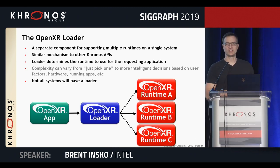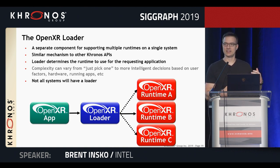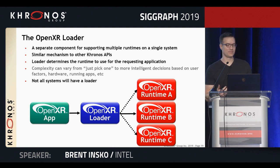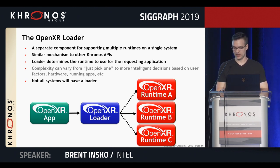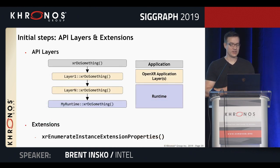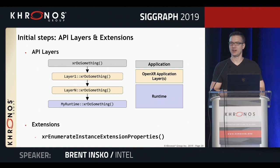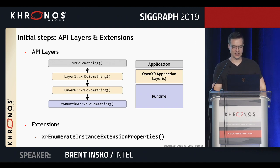First off is the OpenXR loader, similar to other Khronos APIs. It's a separate component to support multiple runtimes on one system — you may have various vendor platforms plugged into your system at the same time. The loader is the mechanism the app talks through to communicate to a particular runtime, and there are mechanisms for choosing which runtime to use. Regarding API layers and extensions: the spec is extensible like other Khronos APIs, and there's also the notion of adding an API layer — you can inject a validation or tracing layer between the application and the underlying runtime.